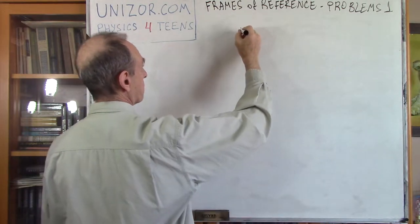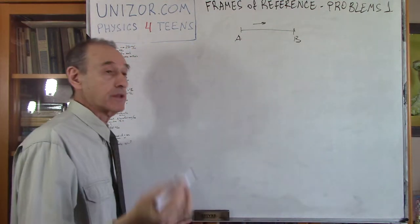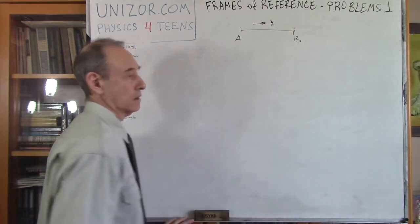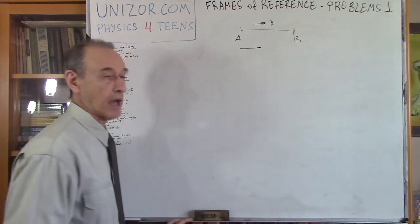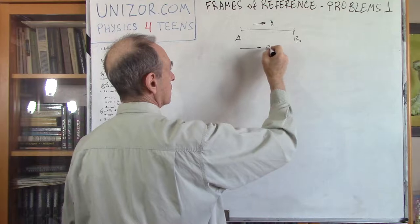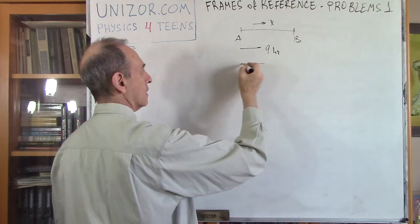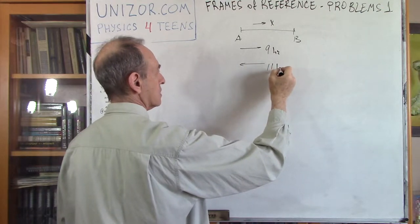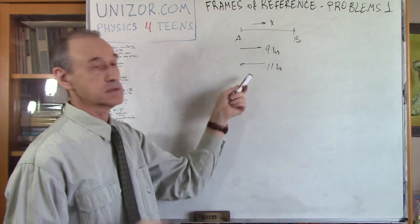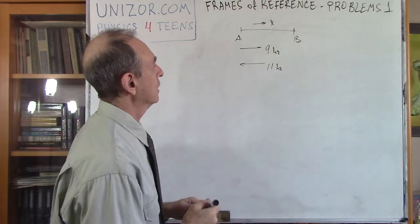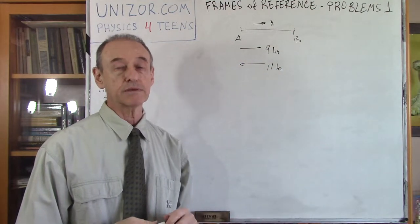Next, we have a river flowing with unknown speed x. We have a boat that goes downstream from A to B in 9 hours, but whenever it goes back from B to A it spends more time — 11 hours. Obviously, the flow of the water helps going downstream and prevents going upstream. The problem is to find the speed of the water flow.